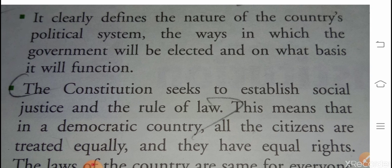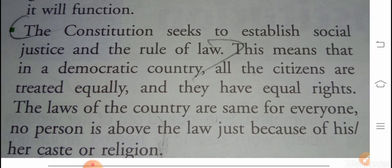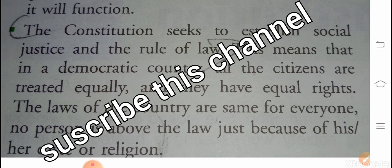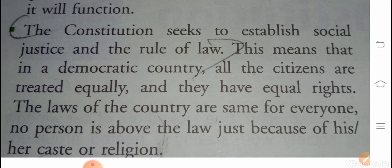The way in which the government will be elected and on what basis it will function — किस तरीके से government elect होगी और किस आधार पर उसका कार्य होगा। The constitution seeks to establish social justice and the rule of law — constitution social justice और rule of law को establish करता है। This means that in a democratic country all the citizens are treated equally and they have equal rights. The laws of the country are same for everyone — किसी भी जाति या धर्म के अनुसार नहीं, सबके सामने कानून एक समान है।